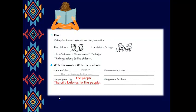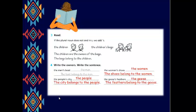The women's shoes. Who's the owner? The women. And the shoes belong to the women. The geese's feathers. The geese are the owner and the feathers belong to the geese. Good job girls.